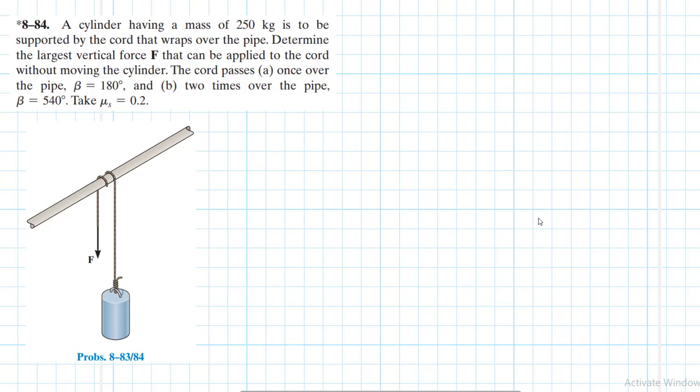Determine the largest vertical force F that can be applied to the cord without moving the cylinder. The cord passes in case A once over the pipe, beta equals 180 degrees, and in case B two times over the pipe, beta equals 540 degrees. Take mu s, which is the coefficient of static friction, equal to 0.2. This problem is from the engineering mechanics statics textbook, 13th edition by RC Hibbeler.